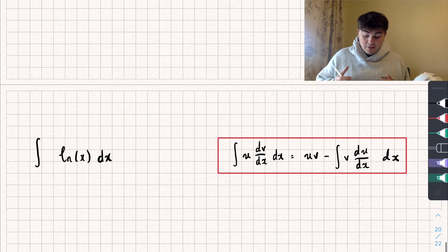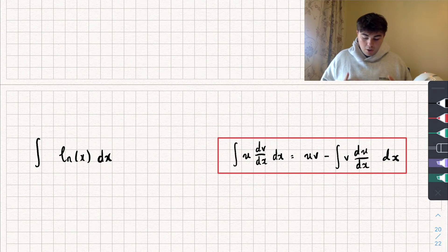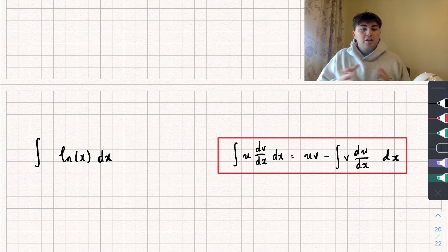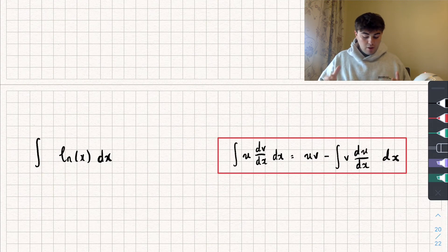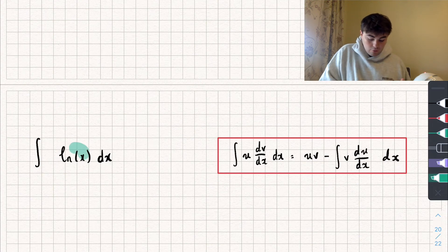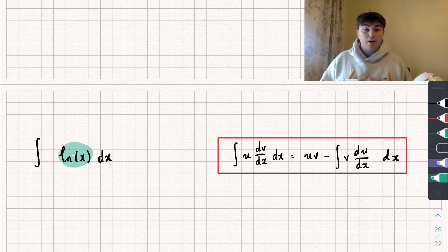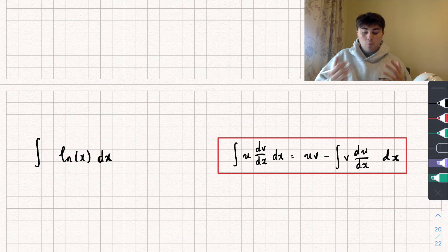I've written the integration by parts formula in that red box there. You might be thinking, well for integration by parts we need to have a product of two things. And if we currently look at that integral we just have the natural log of x. So how is this going to work?